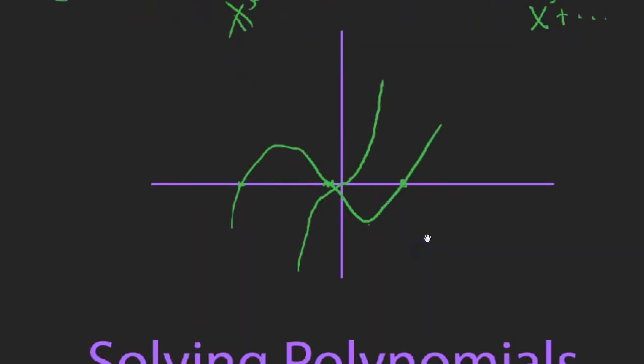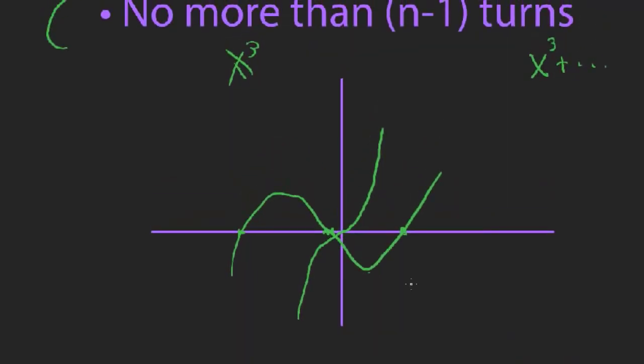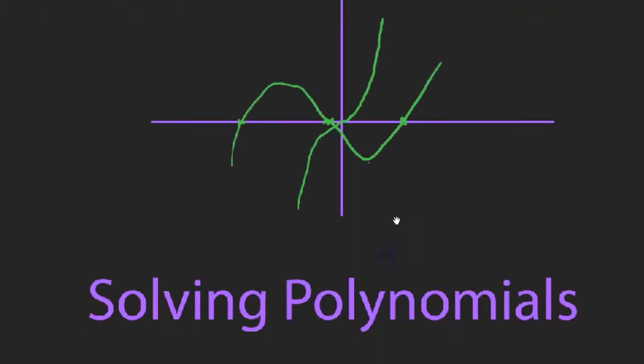Polynomials are defined for all input values, because all that happens in a polynomial is basic addition and multiplication. There's nothing complicated like a logarithmic function. However, they can have weird-looking graphs, and you can't just transform an x-cubed graph into an x-to-the-fourth graph — they're totally different.